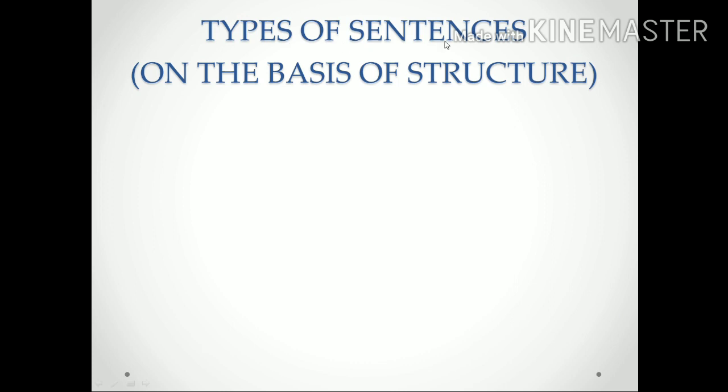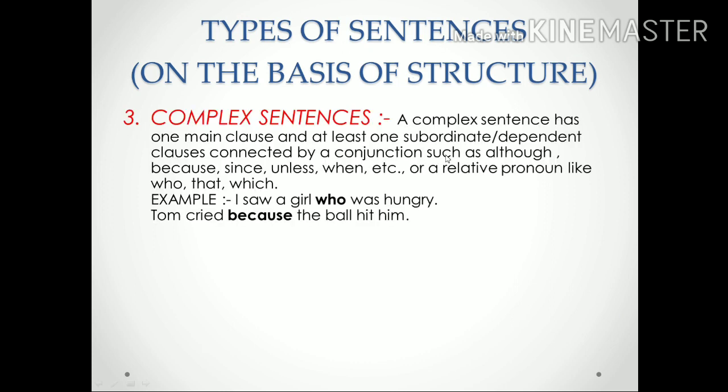Third is complex sentences: a complex sentence has one main clause and at least one dependent clause, connected by a conjunction such as 'although', 'because', 'since', 'unless', 'when', or a relative pronoun like 'who', 'that', or 'which'. Examples: 'I saw a girl who was hungry.' and 'Tom cried because the ball hit him.'